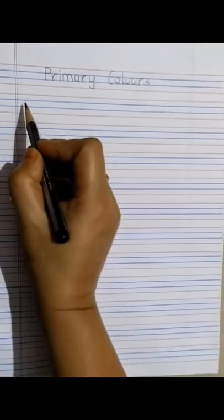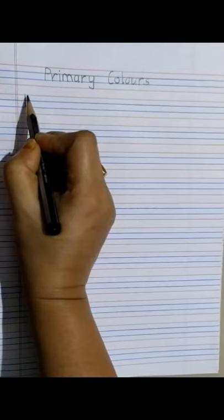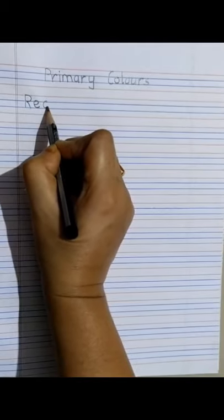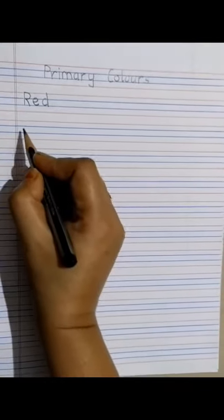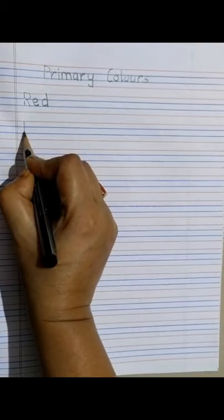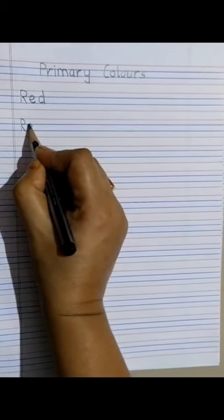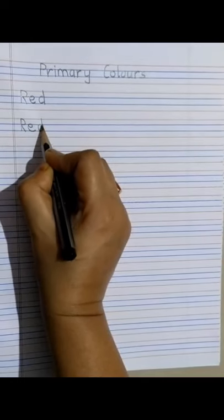Moving on to the next line, we will write the first primary color which is red. We write red: capital R, a small E and a D. Red. Same thing we will write once more. Capital R, E and D. Red.